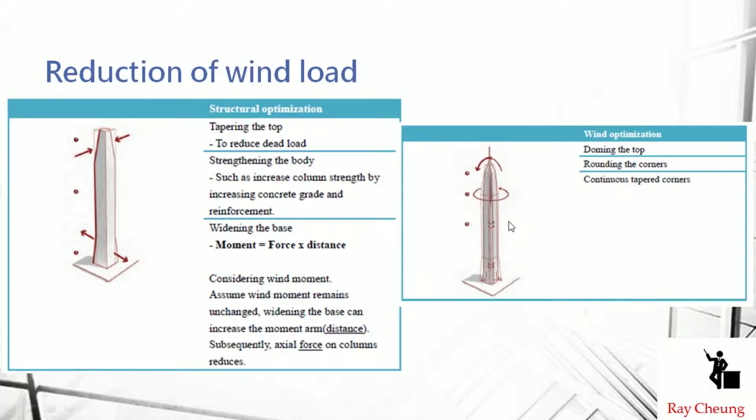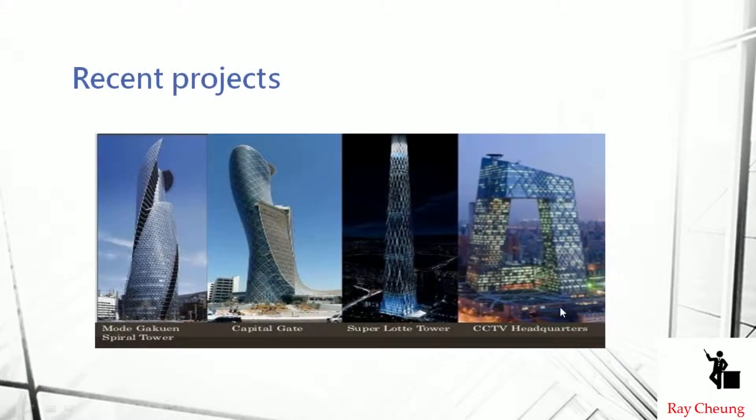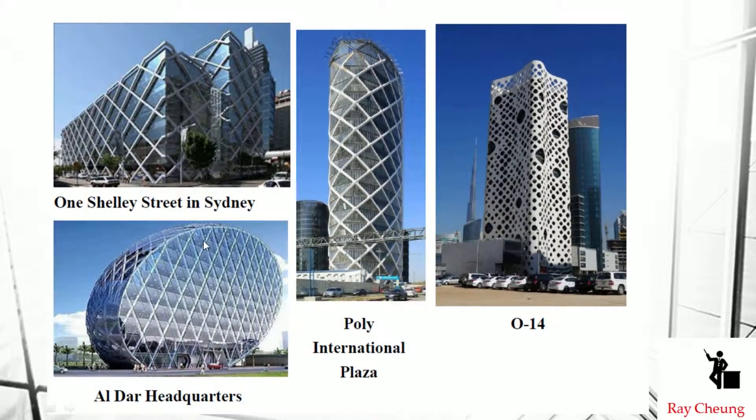Sometimes you can see they have a chamfer near the corner to reduce the wind. This is a so-called example of the diagrid structure. Nowadays buildings in the world, you can see these are very special. Sometimes they keep on changing the form and the structures.